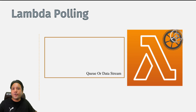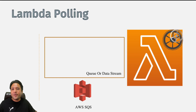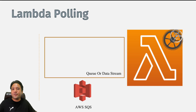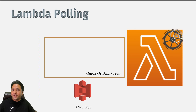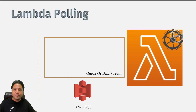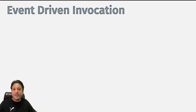The best example we can talk about is AWS SQS. Whenever data comes to AWS SQS, Lambda is internally going to continuously pull this SQS, and once the data reaches the SQS the Lambda will take that message, process the message, and send a response back to SQS that this message has been fulfilled.